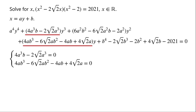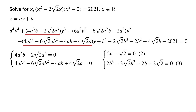The system is: 4a³b − 2√2·a³ = 0, and 4ab³ − 6√2·ab² − 4ab + 4√2·a = 0. Since a ≠ 0, divide the first equation by 2a³ to get 2b − √2 = 0, which we label equation 2. Divide the second equation by 2a to get 2b³ − 3√2·b² − 2b + 2√2 = 0, which we label equation 3.